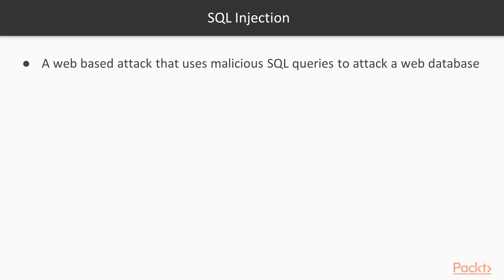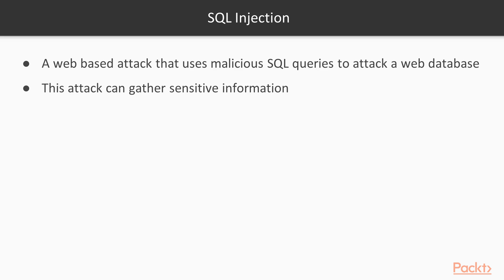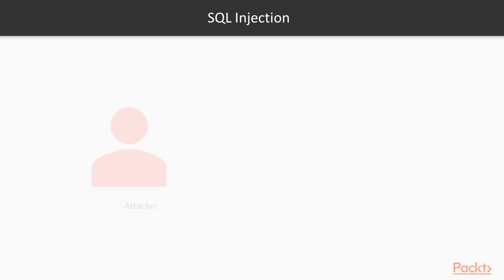To gather information from a web database, attackers generally use malicious SQL queries to attack a web server. SQL injection attacks can gather sensitive information such as usernames, passwords, phone numbers, addresses, fax numbers, and email IDs — these kinds of sensitive details can be obtained from websites using SQL injection.